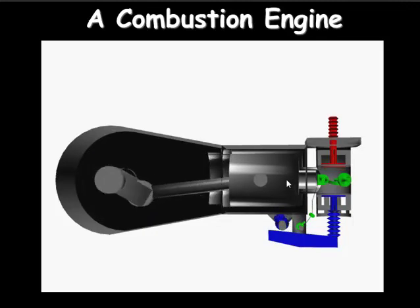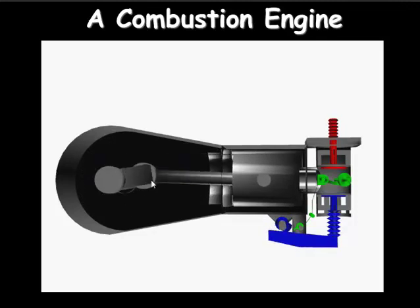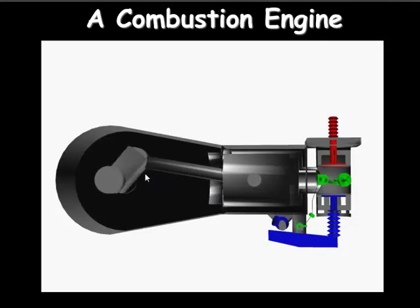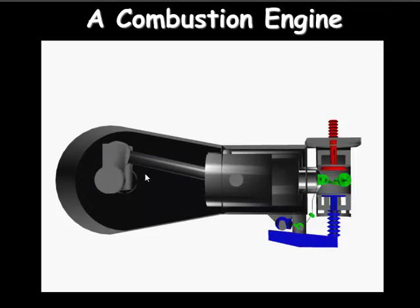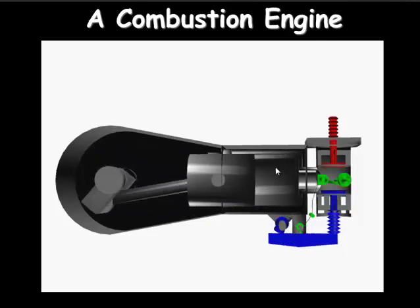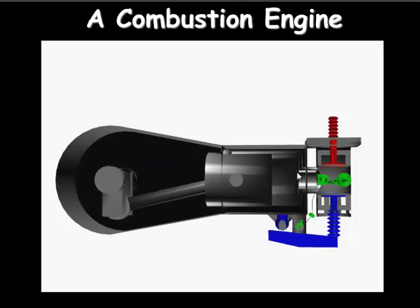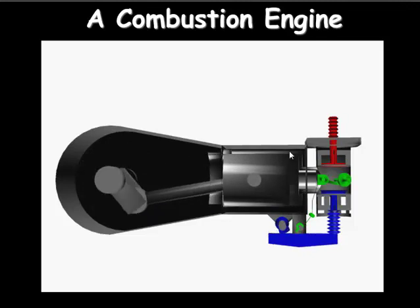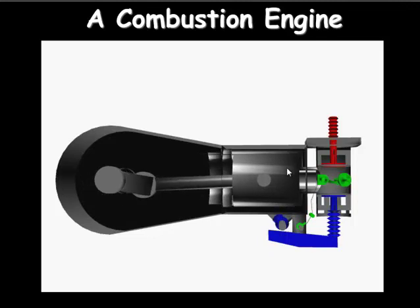What this model shows fairly effectively is what happens. We have a piston and the piston is caused to move up and down, and that moving up and down causes the rotation of a crankshaft, and that rotational energy is then transferred into something else. If it was a car, it would be the motion of the car.